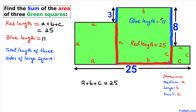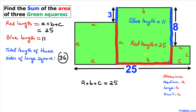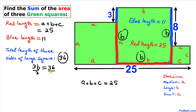The total of these three sides of the large square is 11 plus 25, which gives us 36. Each side length of the large square is b, so the total length of three sides is b plus b plus b, which makes 3b. So 3b equals 36. Dividing both sides by 3, b turns out to be 12.